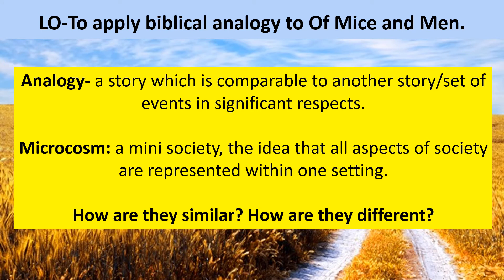So two ideas we've discussed during this unit of Of Mice and Men: the idea of an analogy — a story which is comparable to another story or set of events in significant respects — and then microcosm, a mini society, where all aspects of society are represented within one setting. We've talked about the section in the barn where Lenny goes to see Crooks, where the four characters Curly's wife describes as the weak ones represent a kind of mini society. How are these two concepts of analogy and microcosm similar and how are they different? That's really complicated — if your head is hurting while you're trying to think about that, you're probably doing it right. That concludes our lesson on the idea of analogy.